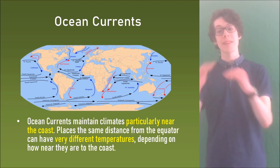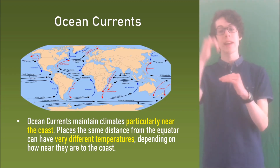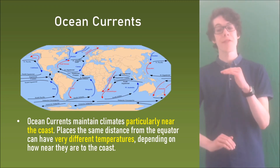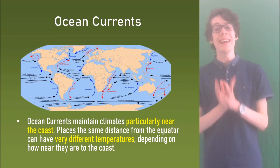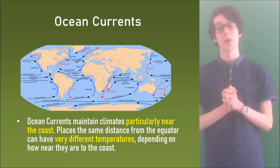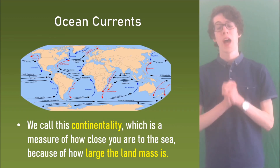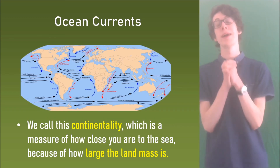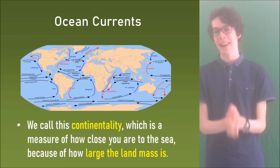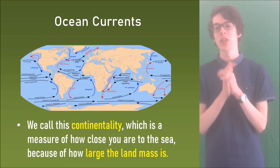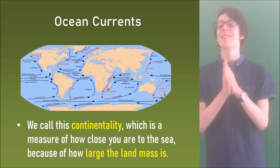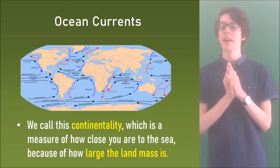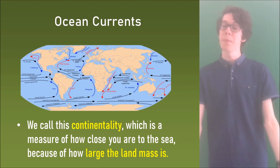Places the same distance from the equator can have very different temperatures depending on how near they are to the coast. We call this continentality, which is a measure of how close you are to the sea because of how large the landmass is.